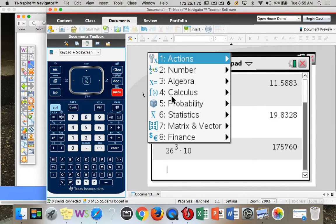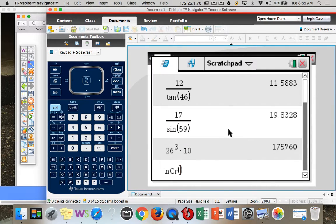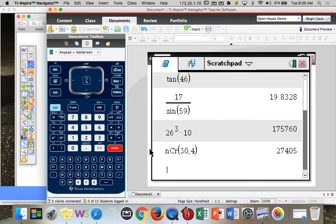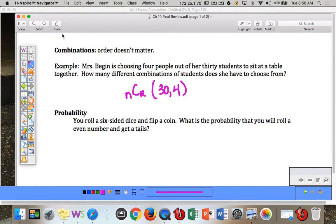So here's what it looks like. Menu, probability, combinations. Out of 30 students, comma, you want four. And there's 27,405 ways that I could arrange a table of four students from a class of 30.